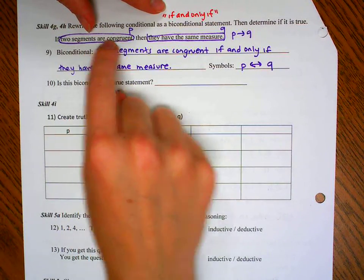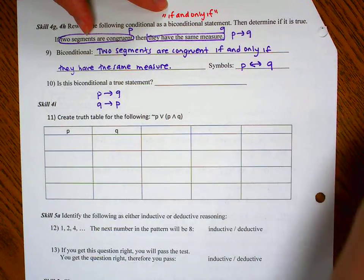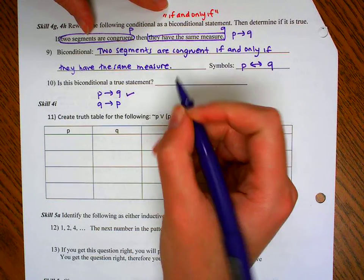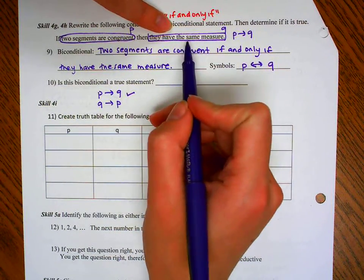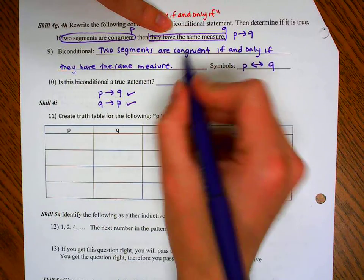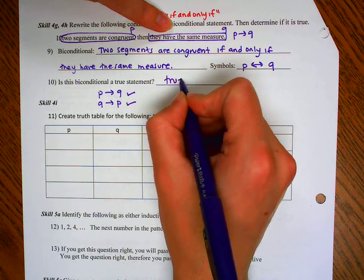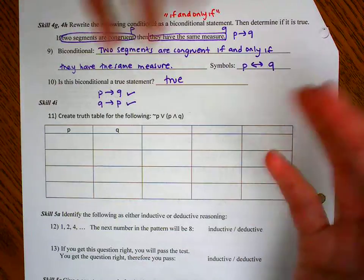So is it true? If two segments are congruent, then they have the same measure or the same length. Yes, that's going to be true. If they have the same measure, if they have the same length, then they are congruent. Yes, that's true. So we have a true bi-conditional because both directions are correct or true.